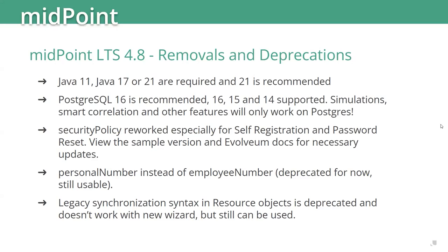Regarding deprecations: Java 21 is recommended but Java 17 or 11 can still be used. Most people upgrading to 4.8 have gone with 17 or 21, especially if running in containers. The biggest database consideration is that simulation, smart correlation, and many other new features only work on PostgreSQL and only on the later supported versions — specifically version 15 and 16 — because they are built on specific database features.